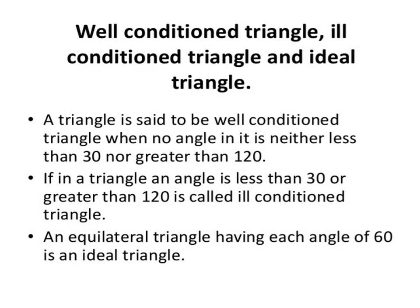A triangle is said to be a well-conditioned triangle when no angle in it is less than 30 degrees nor greater than 120 degrees. If in a triangle an angle is less than 30 degrees or greater than 120 degrees, then that particular triangle is called an ill-conditioned triangle. An equilateral triangle, having each angle of 60 degrees, is considered an ideal triangle.